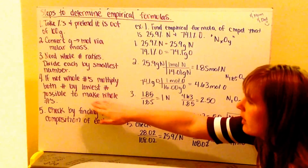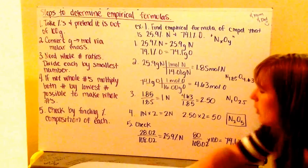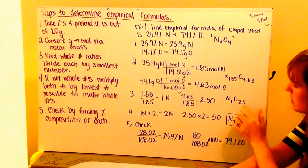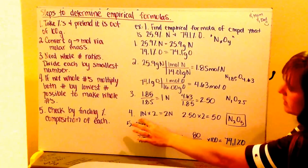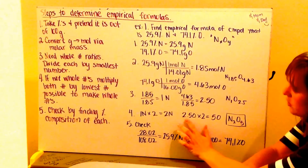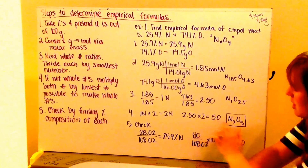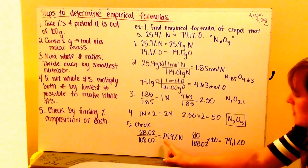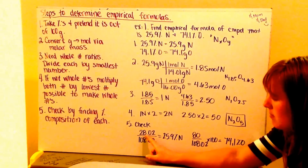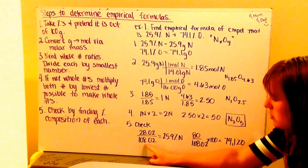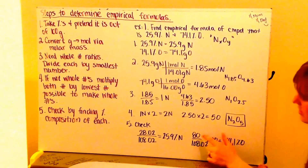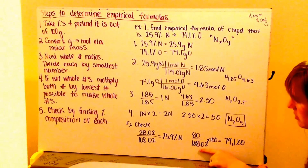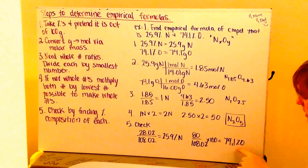So this is where I get to step four: multiply both by the lowest number to make them whole numbers. 2.5 multiplied by 2 makes it 5, so the lowest multiplier is 2. One nitrogen times 2 gives me 2 nitrogens, and 2.5 oxygens times 2 gives me 5 oxygens. So my empirical formula is N2O5. I can check this: 28 grams of nitrogen divided by 108.02 grams gives 25.9% nitrogen, and 80 grams of oxygen divided by 108.02 gives 74.1% oxygen.